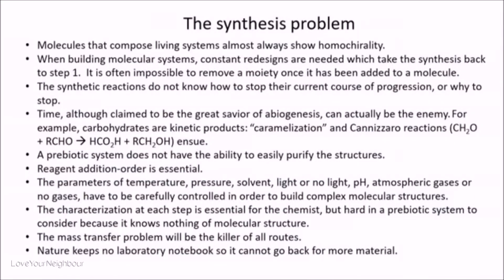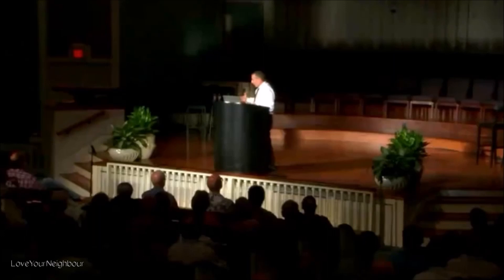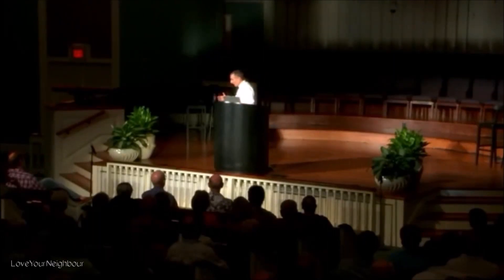It's often impossible to remove a moiety once it's been added to a molecule. Think about this: say there's a process going on where some molecules are being built up, and all of a sudden, somehow in a natural system, it's built a little bit of a wrong segment. First of all, it doesn't even know what's wrong because it doesn't even have a target that it's going to. But let's just say it knew somehow — it made a mistake. What does it do? It has to go back to step one. You often can't remove the moiety once it's been put on there. And because it's homochiral, all these experiments are really hard to do.